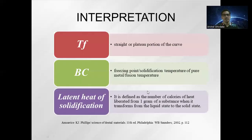In the interpretation of the cooling curve, tf is the flat or plateau portion of the curve. DC is the freezing point or solidification temperature of the pure metal. Latent heat of solidification is defined as the number of calories of heat liberated from one gram of a substance when it transforms from the liquid state to the solid state.